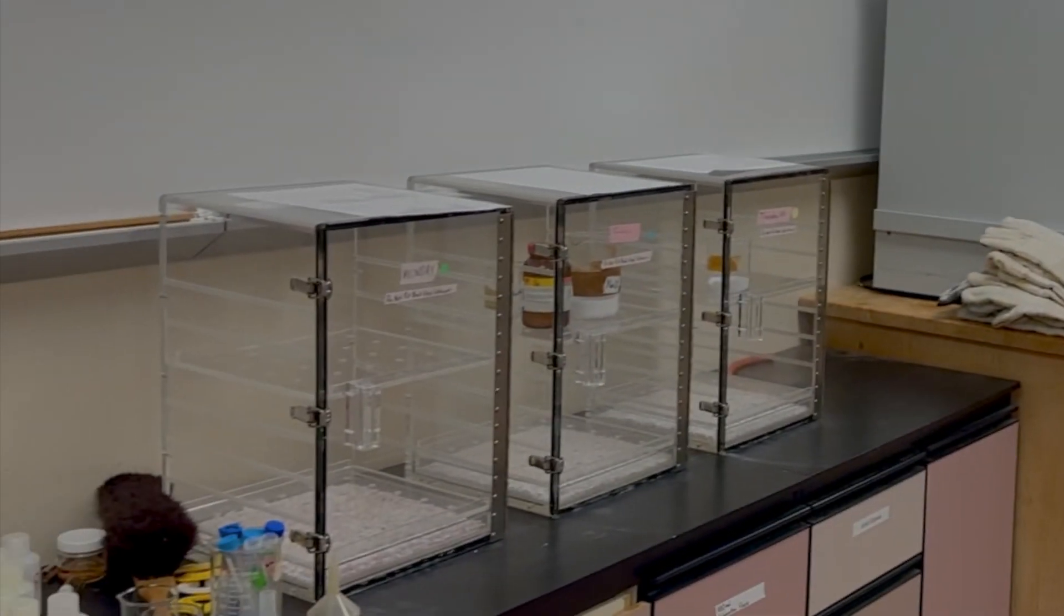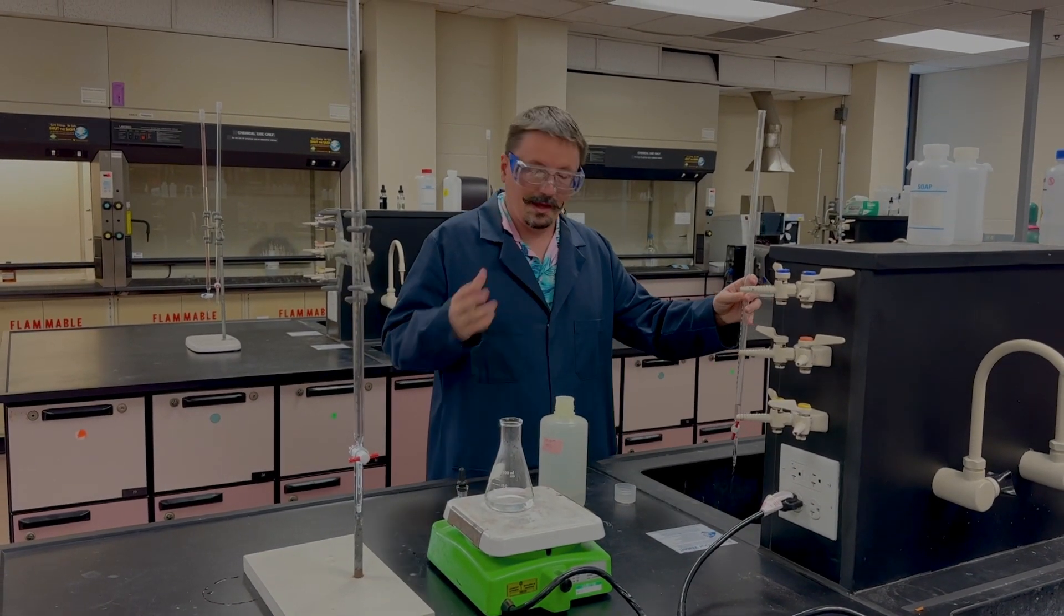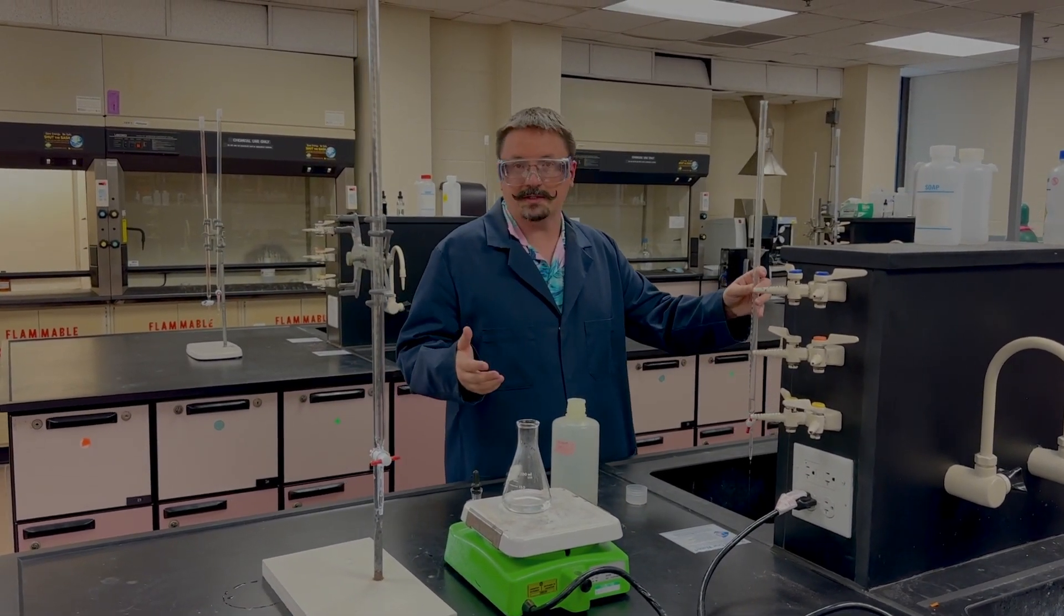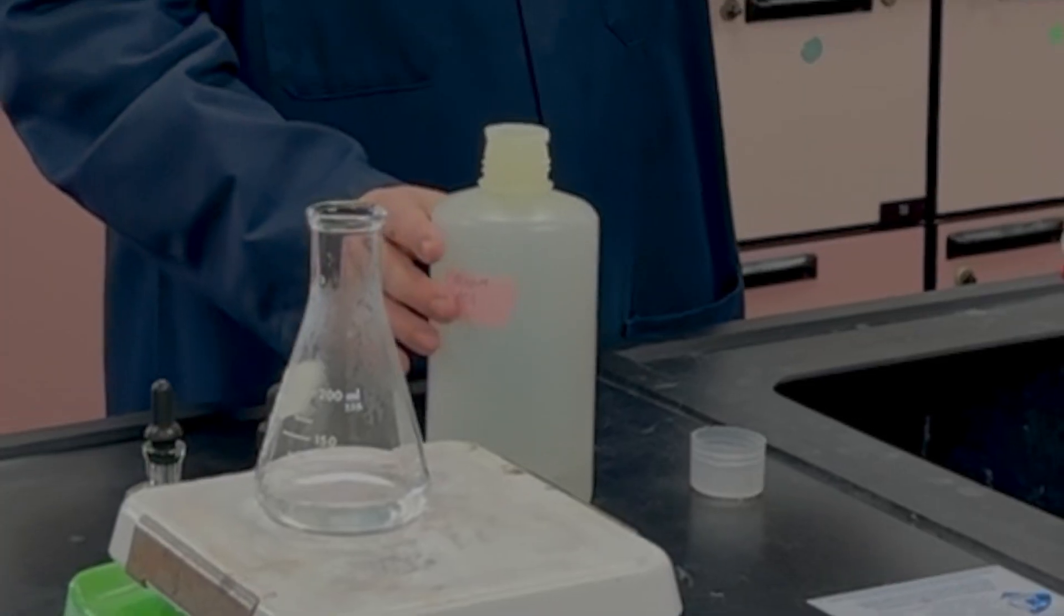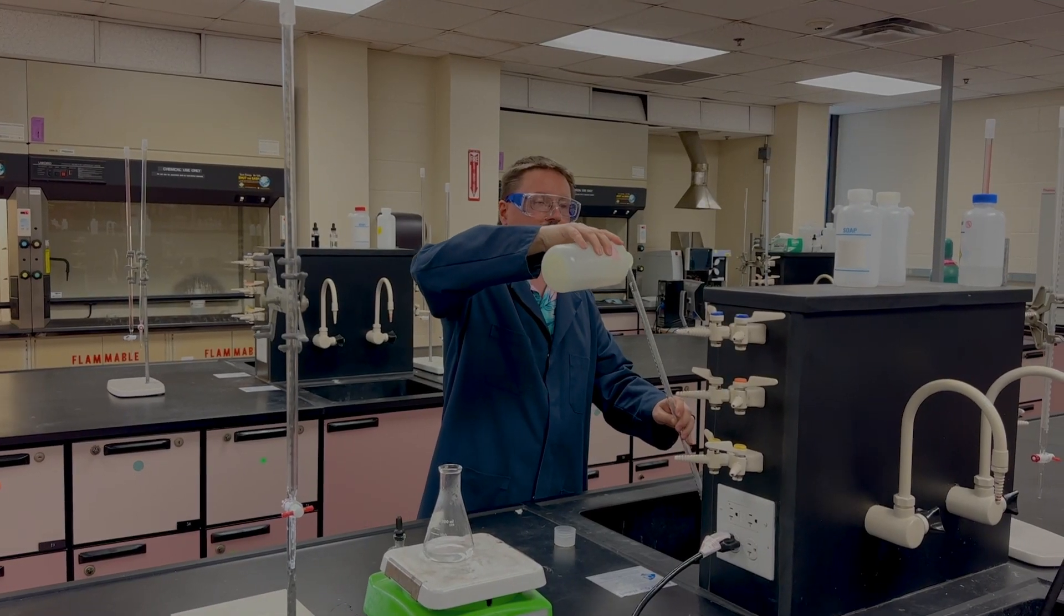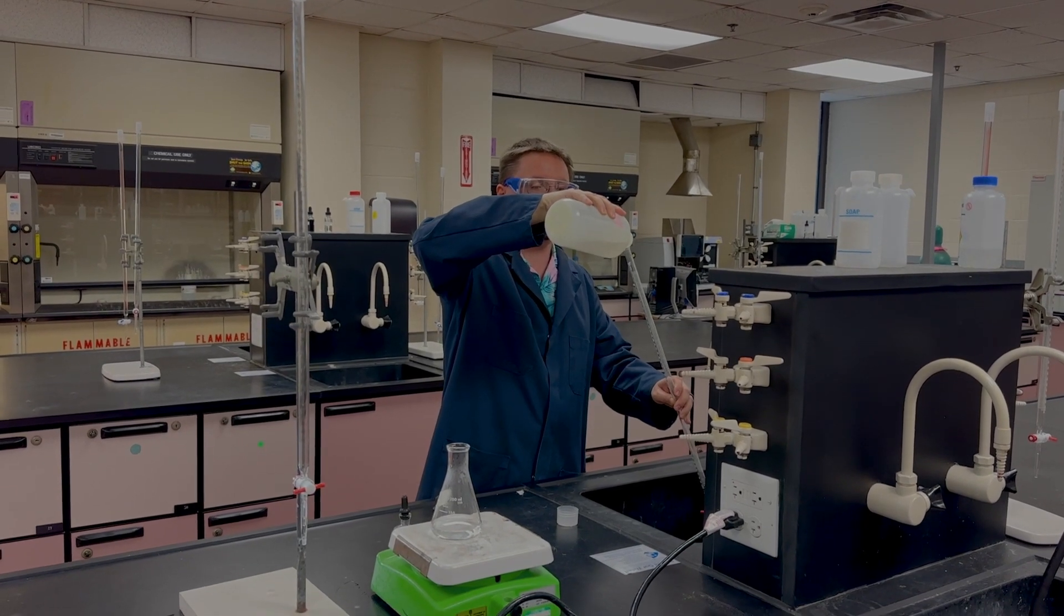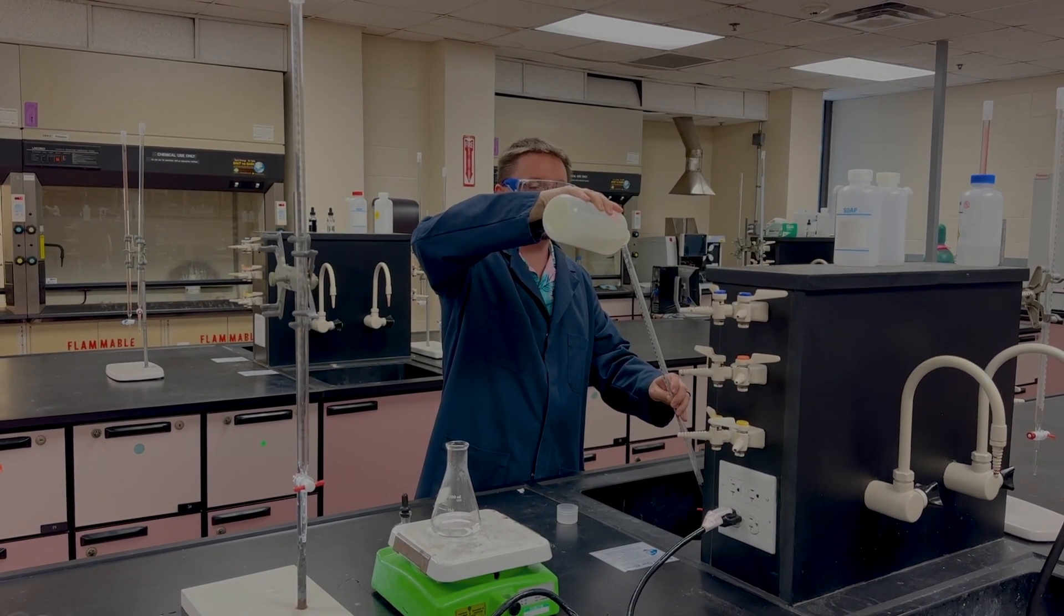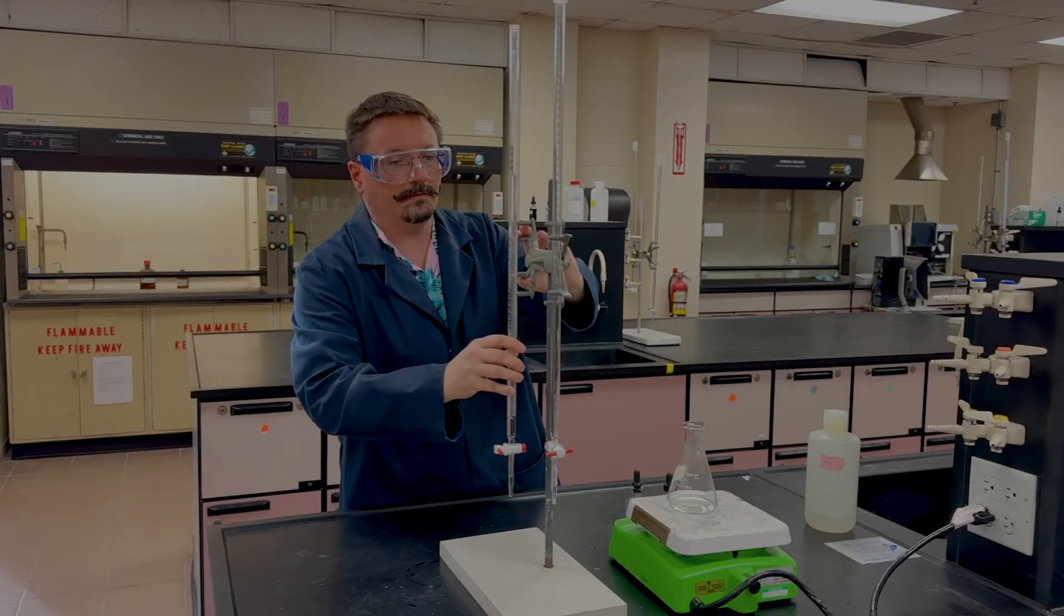Your soda ash unknown will be in the desiccator in a small sample jar, so make sure you get that out. Mass out 0.6 grams of that, go ahead and put that in your Erlenmeyer flask along with your 50 milliliters of water and swirl that. It should dissolve - might take a little while to get all of it to dissolve, but it should definitely dissolve.